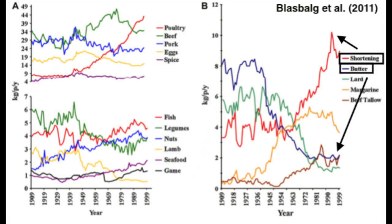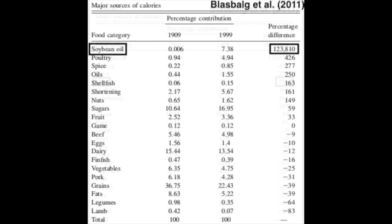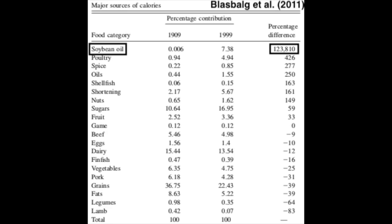Most of the 20th century decreases occurred for foods with significant fat content — mostly saturated. In order to maintain the relatively steady overall fat intake, another fat source had to replace it. The increased nuts and poultry intake accounts for some, and there was also a post-World War II shift away from butter and towards shortening, which increased 161 percent. Vegetable oils excluding soybean oil went up 250 percent, and as a percentage of calories, soybean oil increased 123,810 percent.